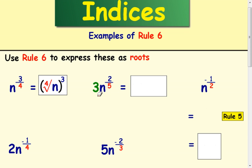Okay, what do we do with this? Well, we've got a 3 in the front. So, just put your 3 in the front and then do the same idea. 5 is the root and the 2 is the power. So, it's the fifth root of n squared.